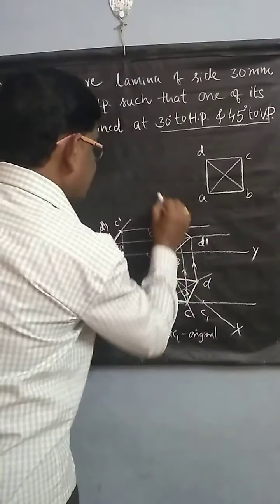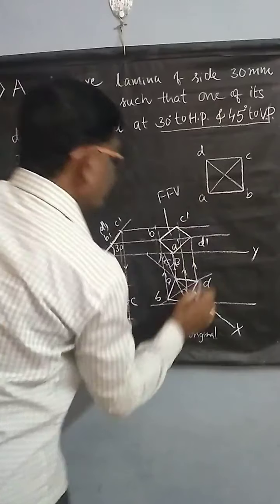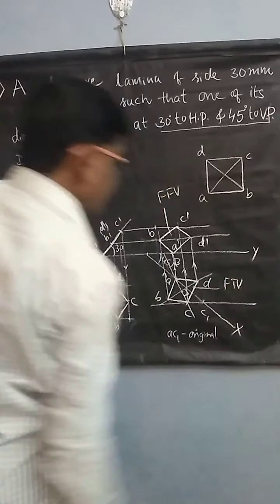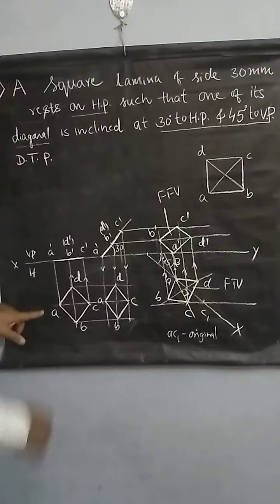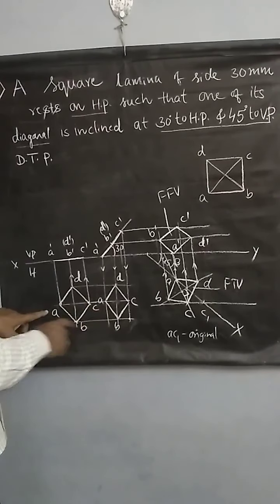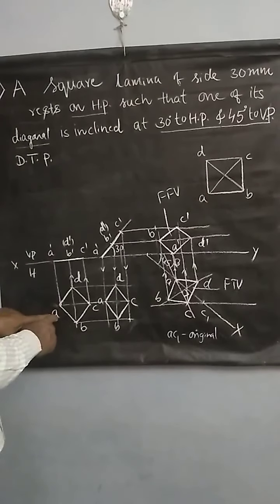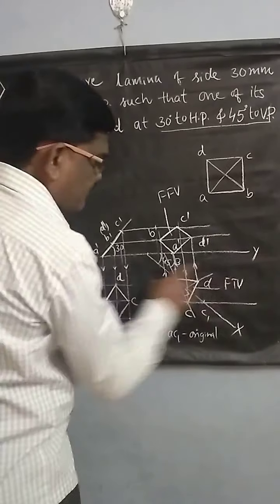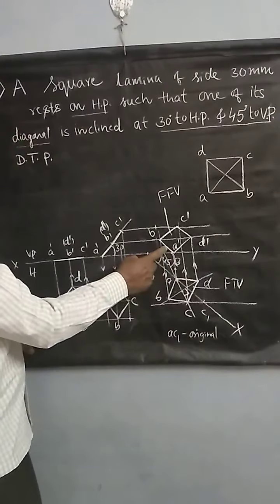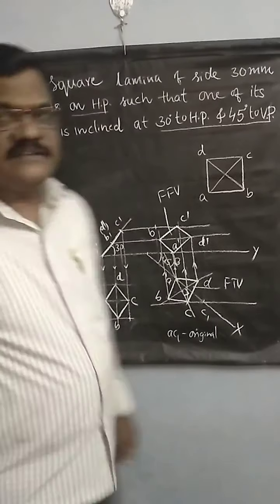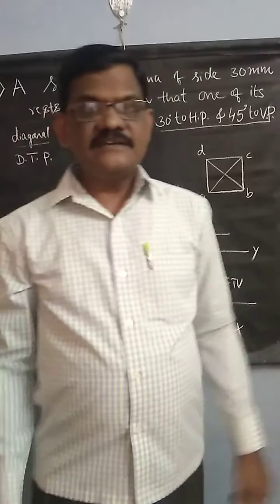This is the final front view and this is the final top view of the lamina. The square lamina is resting on corner A, so this corner A should come on the XY line. A dash is on the XY line, so your solution is right. That completes the solution.